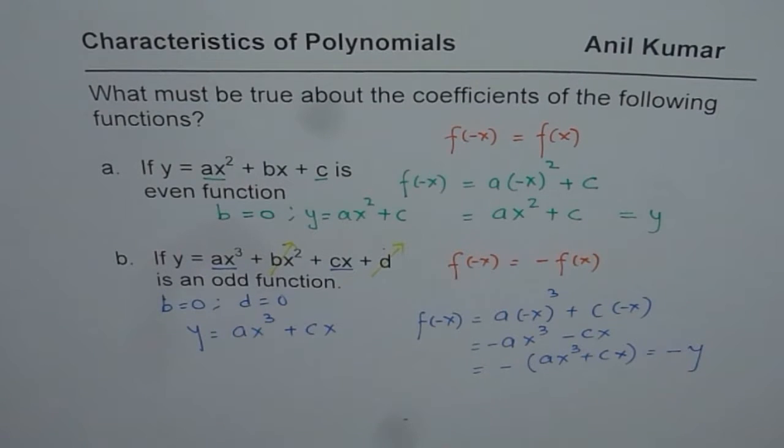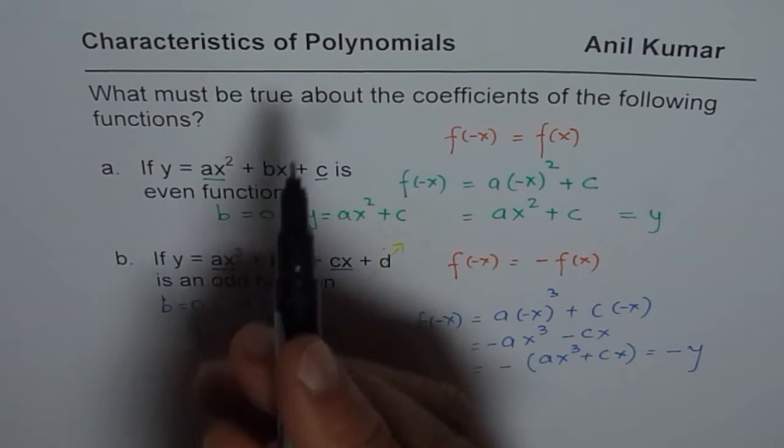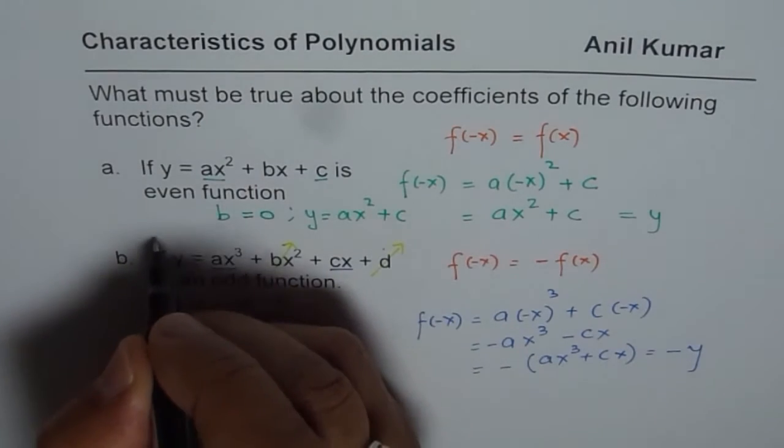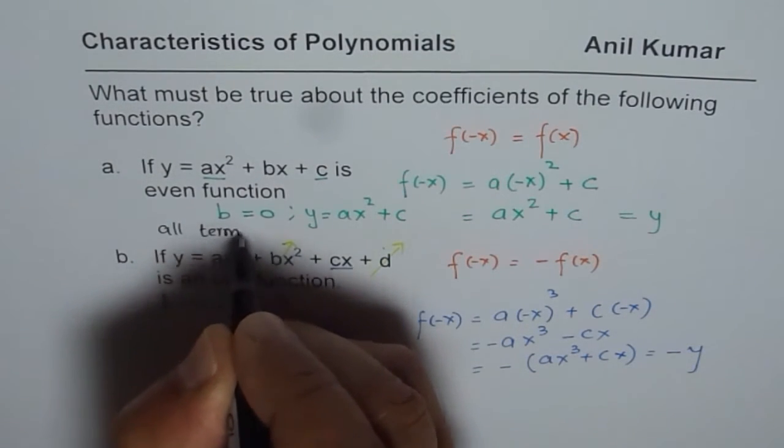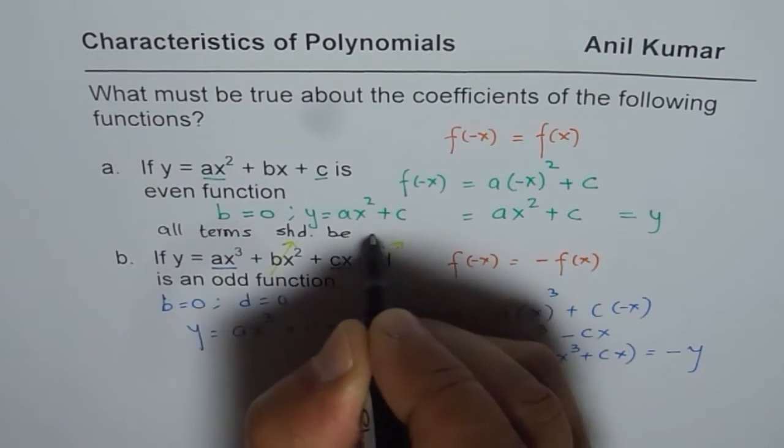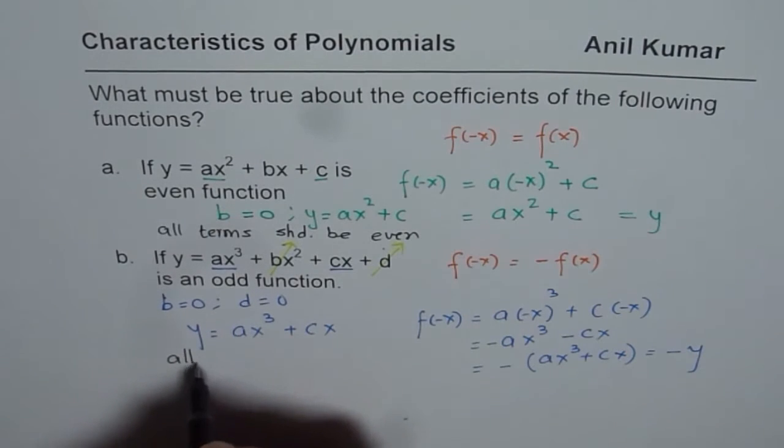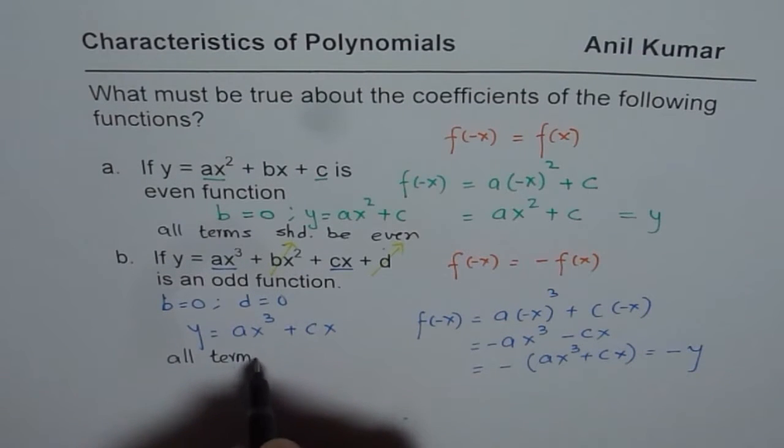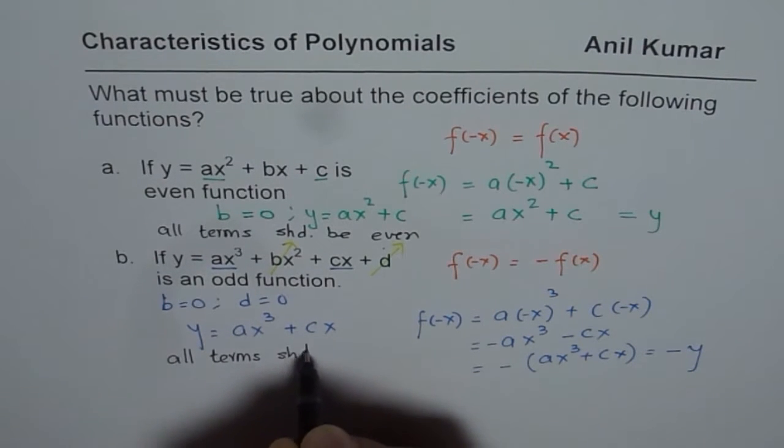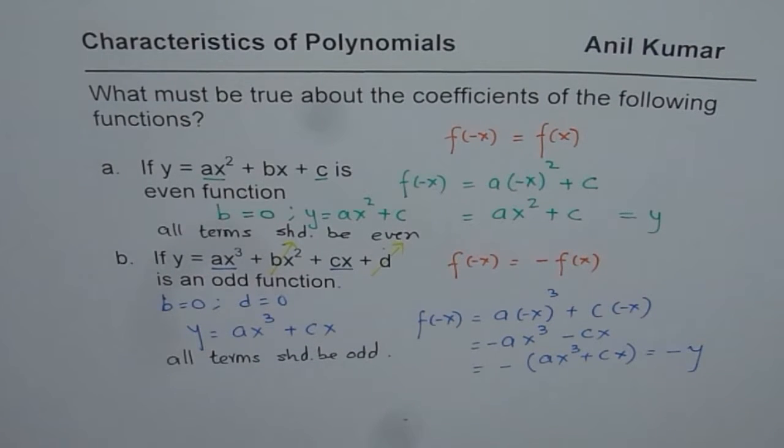So for even functions, all the terms should be even. And for odd functions, all terms should be odd. That is kind of important, and so you can decide whether a function is even or odd just by looking at it.